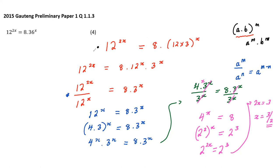Looking back at where we started: we had 12 on the left and 36 on the right. We found that 36 is 12 times 3 - that relationship was the key. That's very important to remember. Always look for relationships between numbers in exam questions. We started small and we're upping the game. I want to go to the next question, which is a bit more challenging.